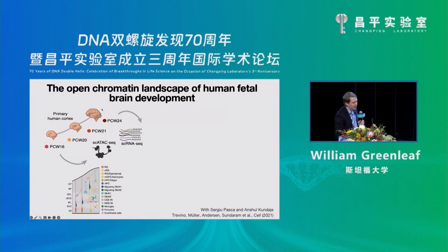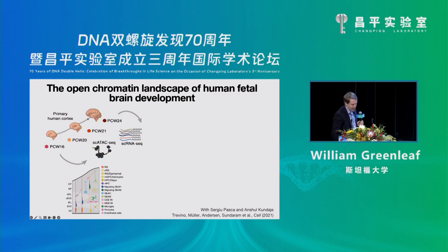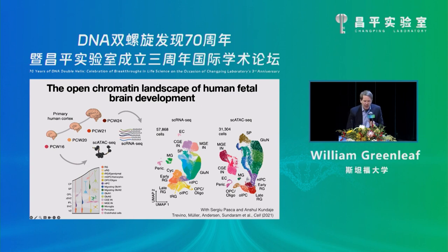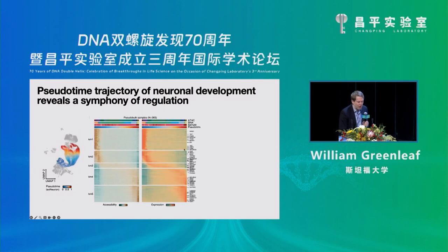We partnered with Sergio Pasca and others to generate open chromatin data across human fetal brain development. Here again are the two views — the open chromatin landscape and the single-cell RNA landscape. We start from stem cells and differentiate up into more mature neurons, and the same trajectory is visible in the open chromatin landscape. We can make pseudotime trajectories and look at accessible elements nearby genes that correlate with expression, nominating the regulatory elements driving gene expression changes across this differentiation trajectory.